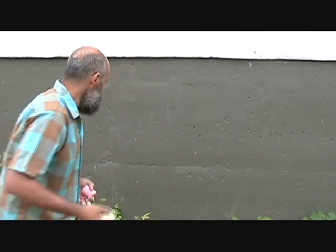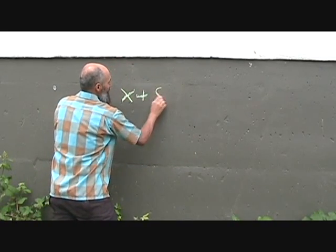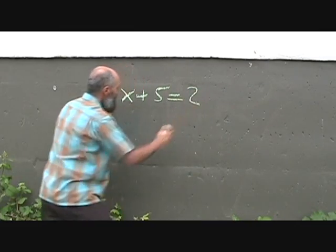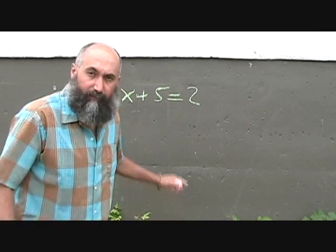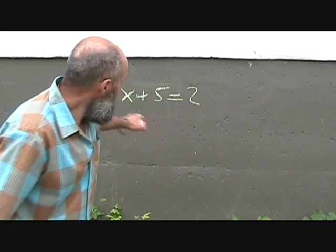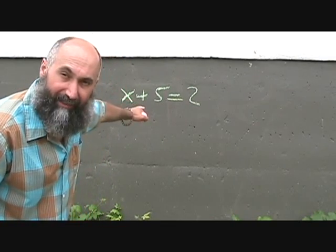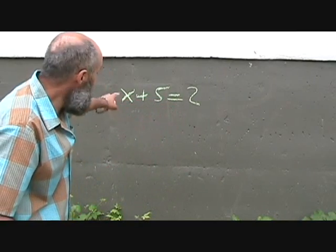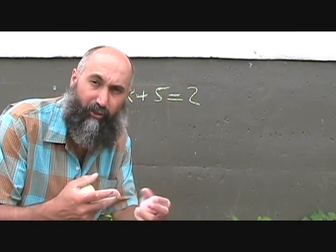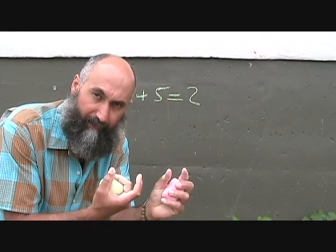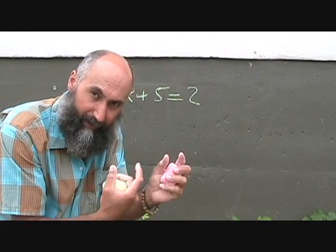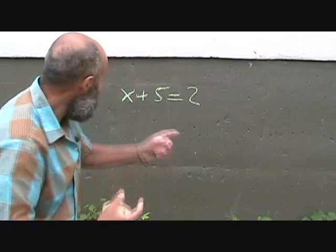One of the first operations we learned when we started the language of mathematics was how to add and subtract. So let's see how addition and subtraction work together with the equal sign. Let's start off with basics. Let's go: x plus 5 is equal to 2. When you have addition and an equal sign, this is two terms on the left side and one term on the right side. Whenever you have addition and subtraction, that's your separation of terms — unless they're all divided by something, but we'll get into that detail.